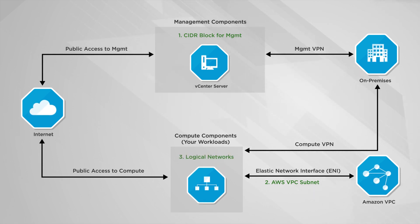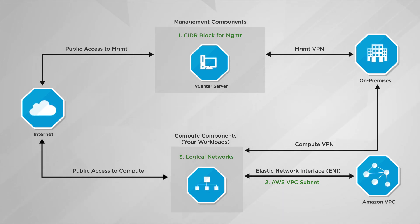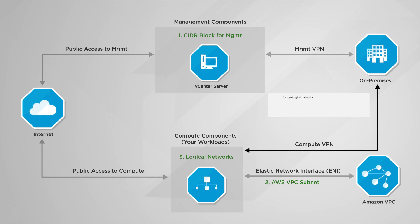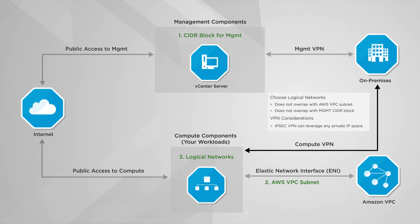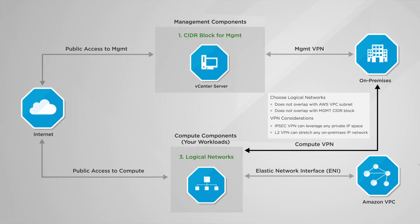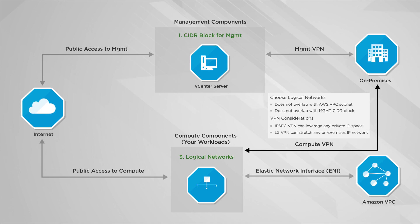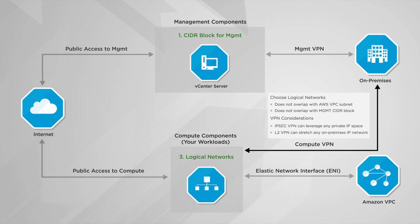The next thing you will need to determine are the logical networks that you are going to use for your VMware Cloud on AWS workloads. Don't overlap with a dedicated Amazon VPC subnet or management CIDR ranges. If you will be using an IPsec VPN, these logical networks will only reside on VMware Cloud on AWS, so any non-overlapping private IP space could be used. If you will be using a Layer 2 VPN for connectivity, you can extend some of your IP networks from your on-premises to VMware Cloud on AWS. Remember, a Layer 2 VPN is required for live workload migrations. Regardless of the VPN connection you use, there is no limit to the number of logical networks you can create.